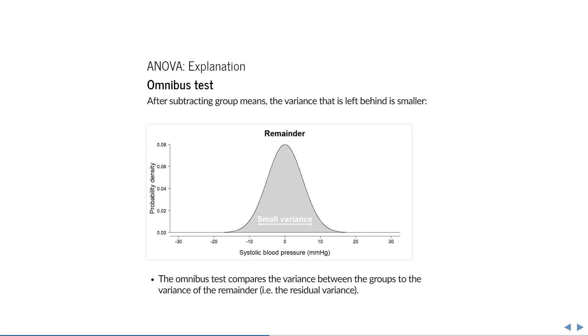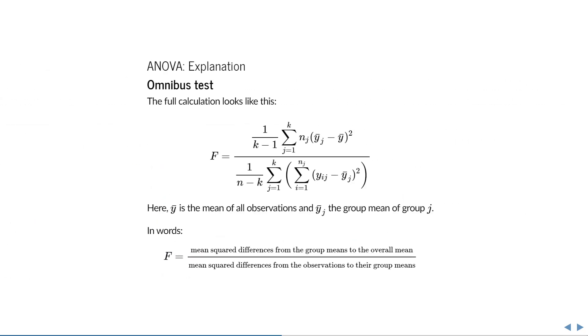The larger the differences between these group means, the smaller the remaining variance, and the more significant the omnibus test. This is the actual calculation of the f value. It might look a bit intimidating, but all it says is an unbiased estimate of the variance in group means, divided by an unbiased estimate of the residual variance.